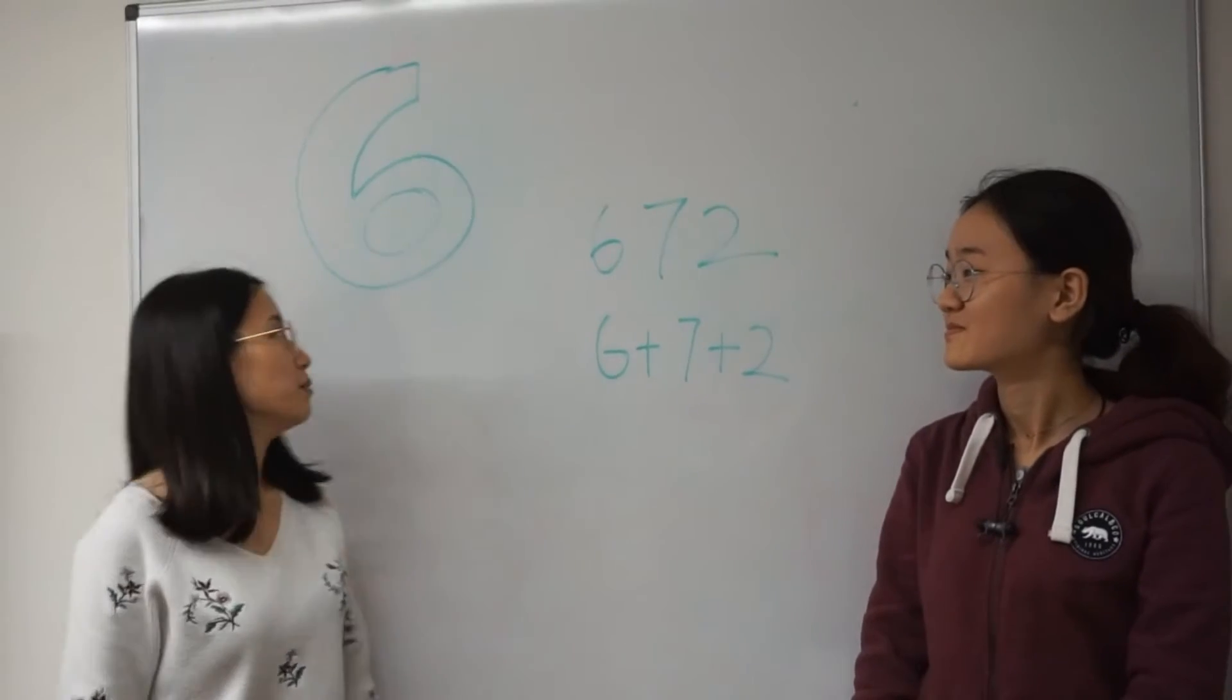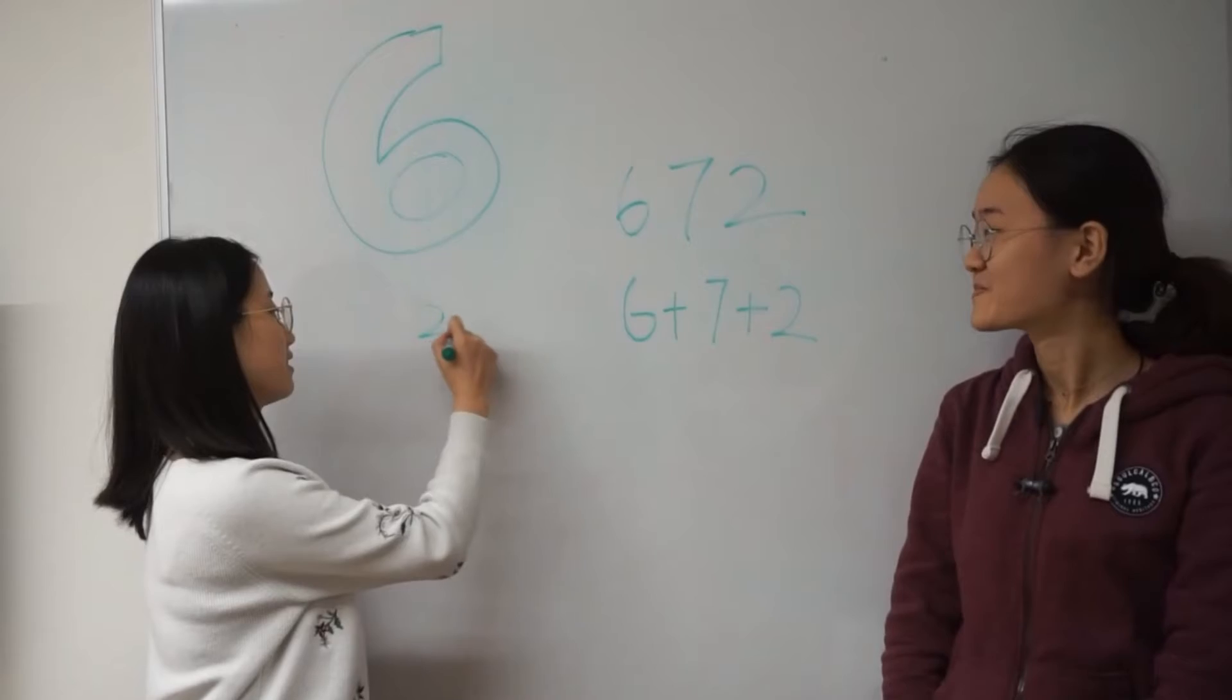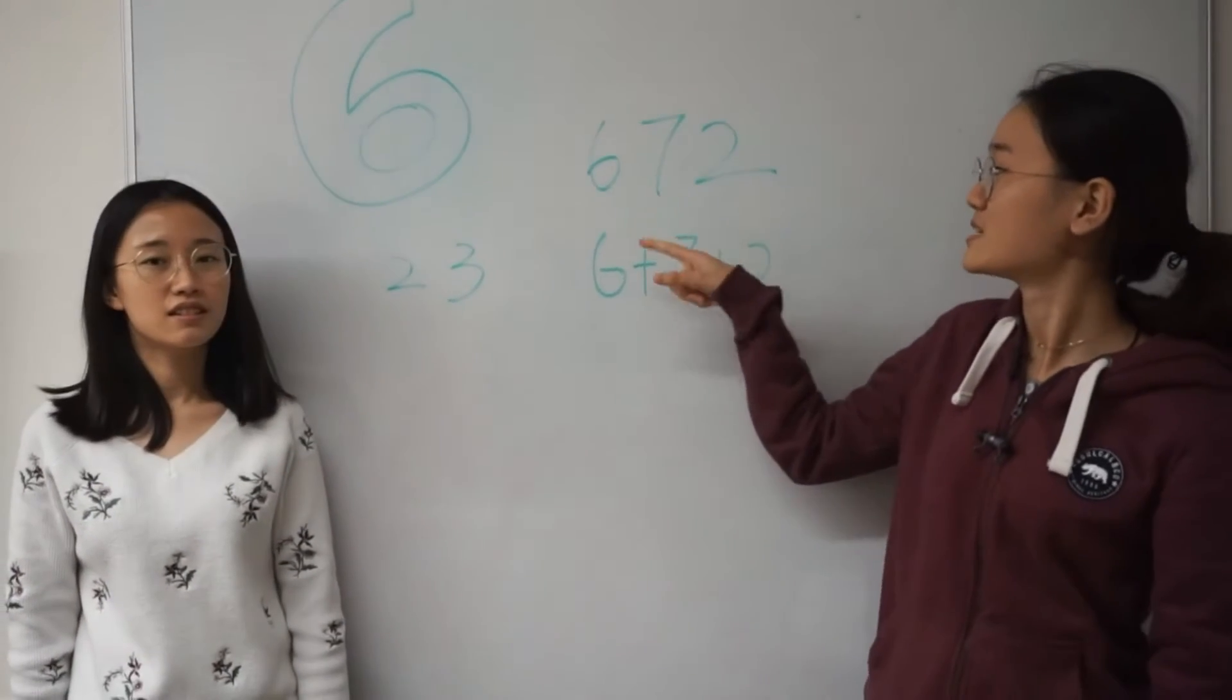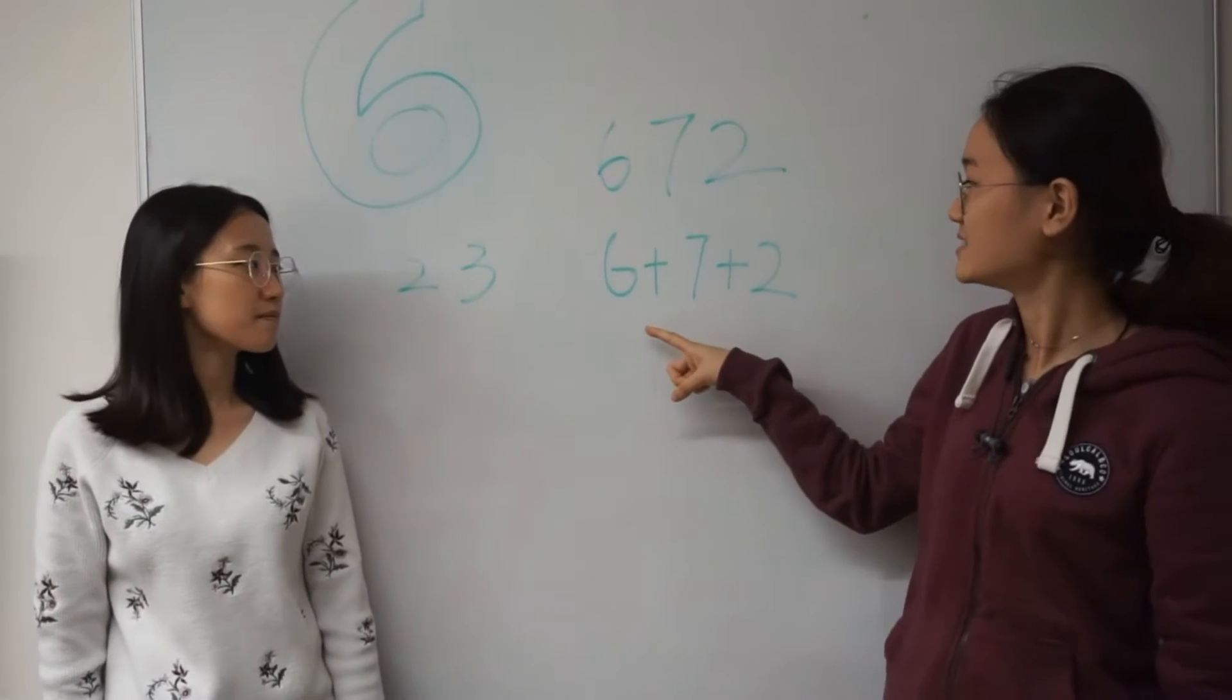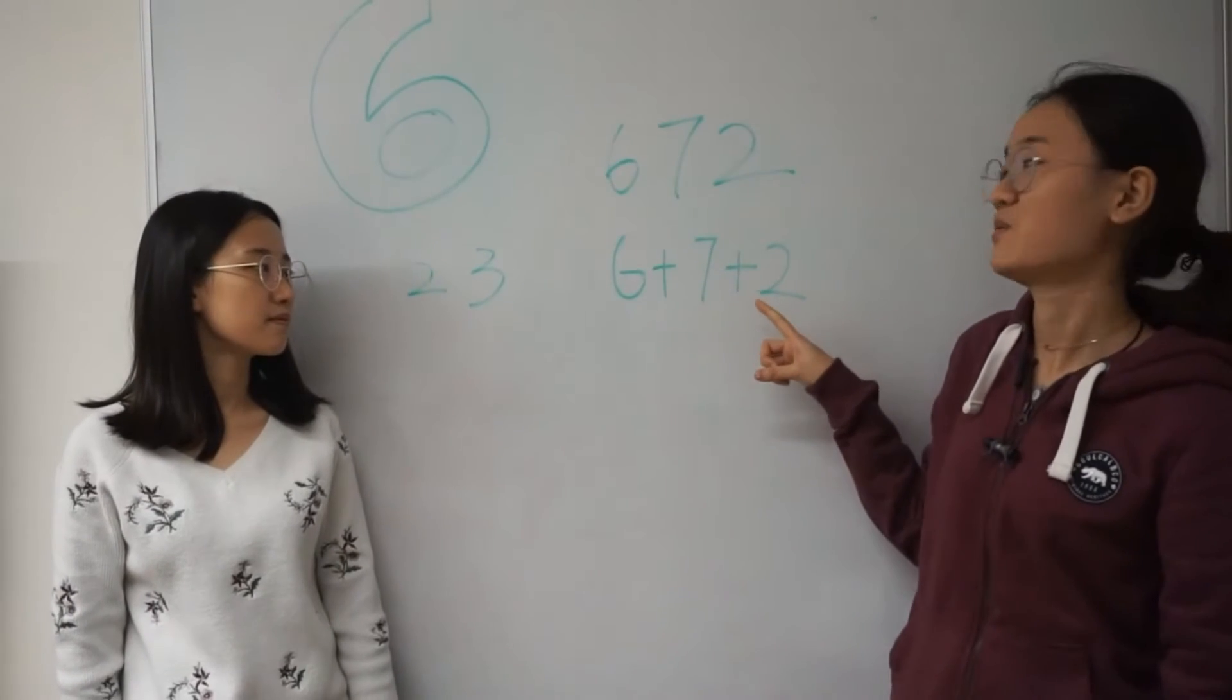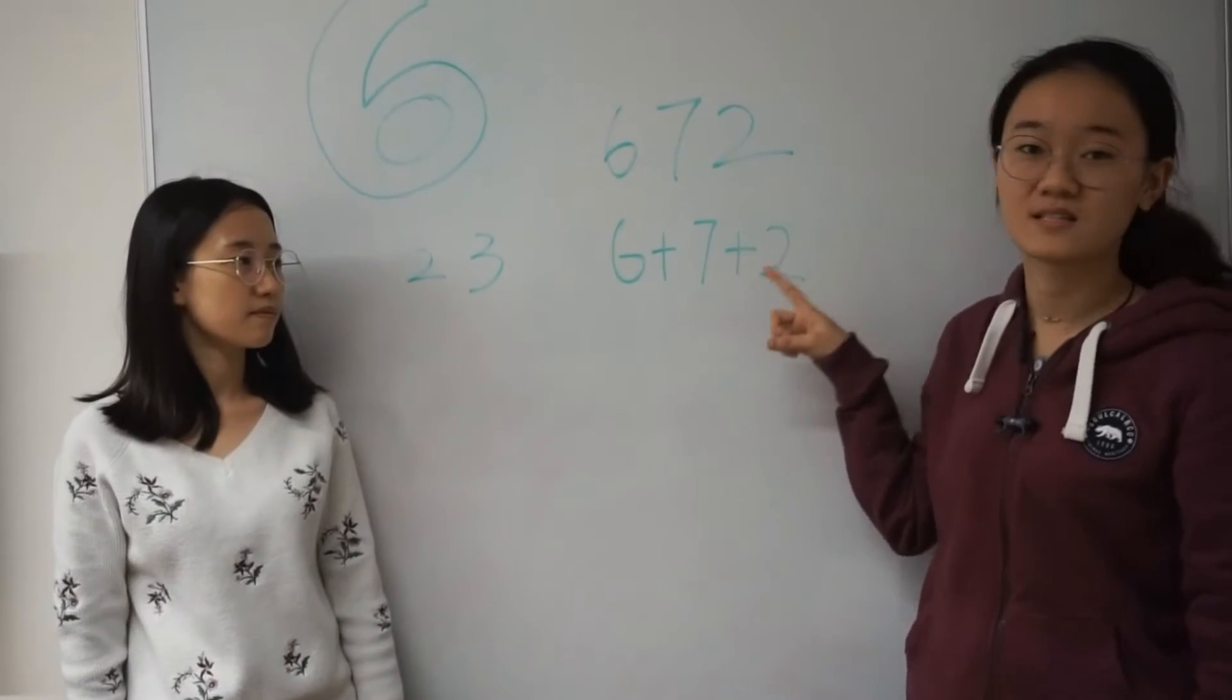If a number is divisible by 6, it is divisible by 2 and 3. For example, the last digit is 2, so 672 is divisible by 2. And 6 plus 7 plus 2 is divisible by 3, so it is divisible by 3. So the number is finally divisible by 6.